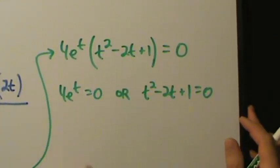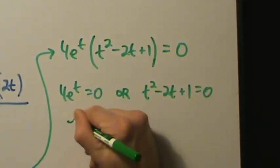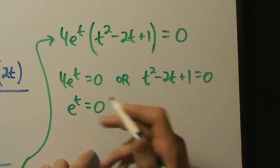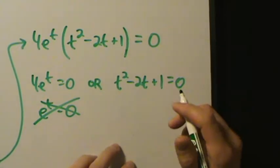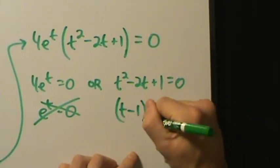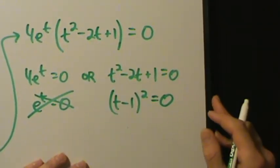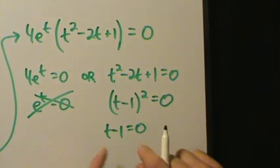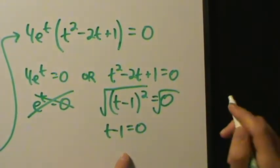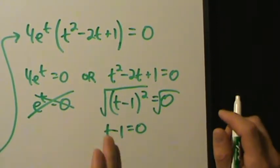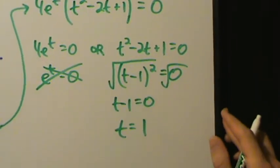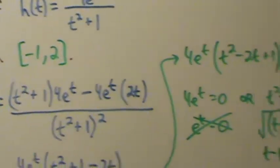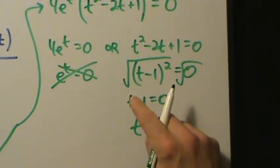4e to the t is never zero — there is no value of t that makes e to the t equal zero. But t squared minus 2t plus 1 factors as (t minus 1) squared, so t minus 1 equals zero, giving t equals 1 as the only critical point. We check: is t equals 1 in the interval from negative 1 to 2? Yes, it is, so we do want to consider it.